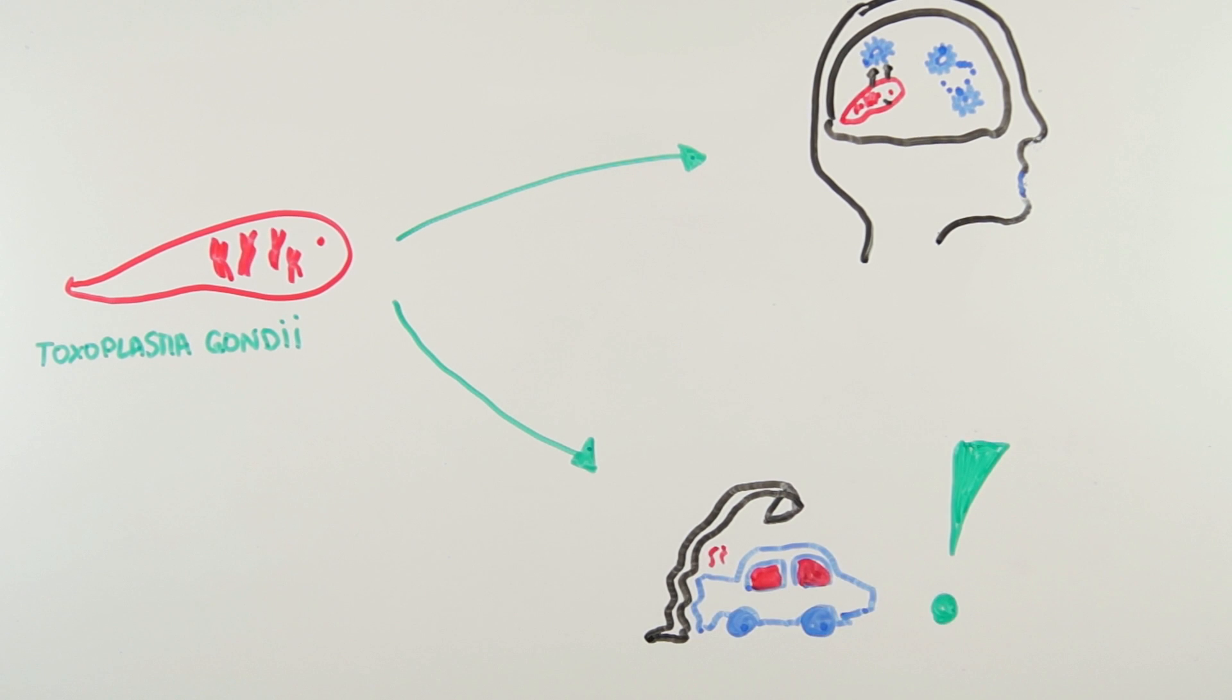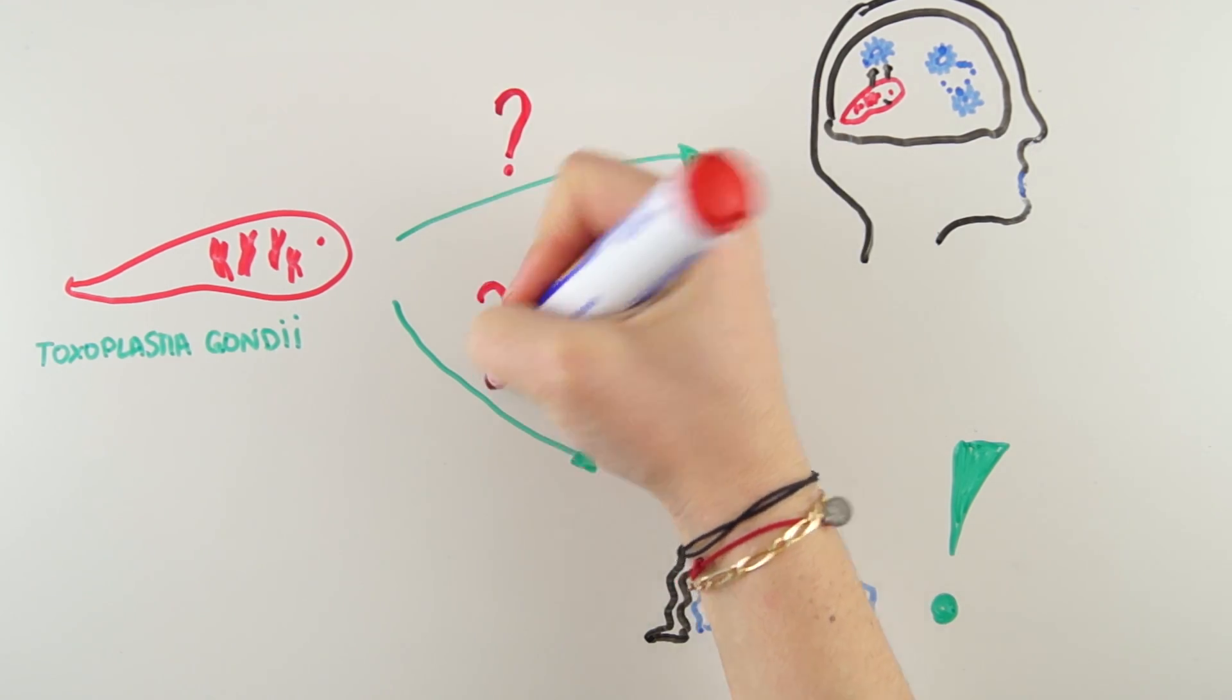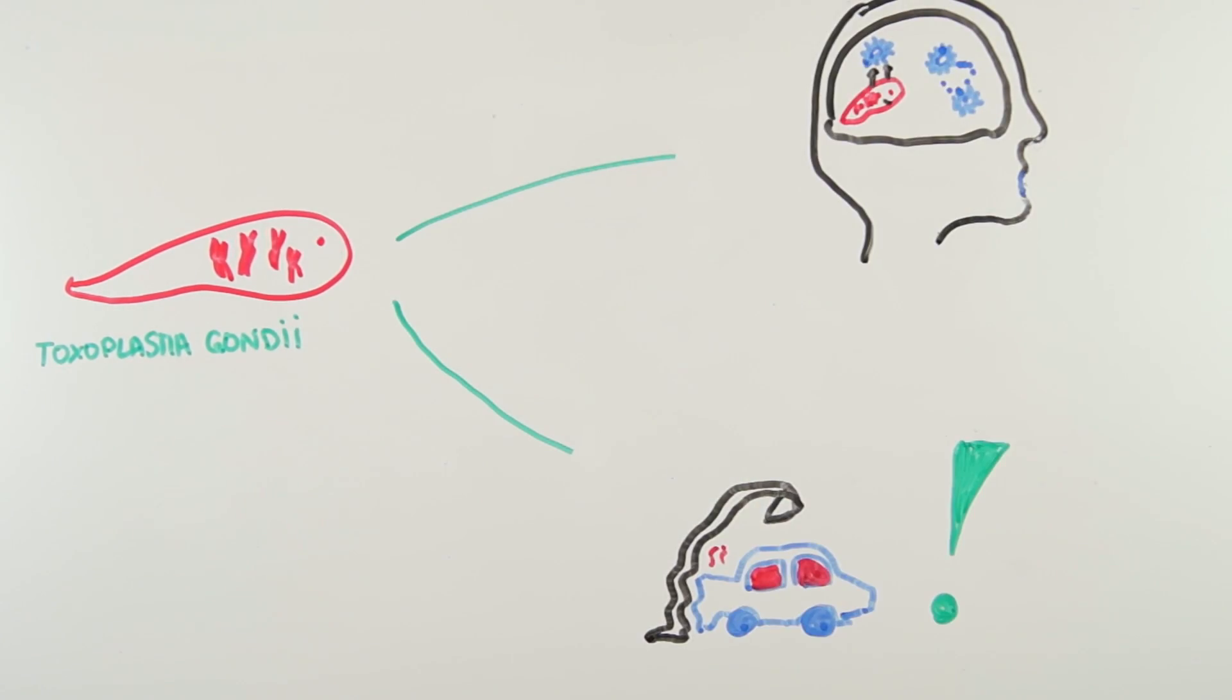Though it is not yet possible to affirm that Toxoplasma gondii causes those behaviors, maybe the fact of being schizophrenic increases the chance to get infected by Toxoplasma gondii. It's a serious topic, especially regarding its abilities to manipulate mice.